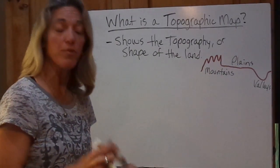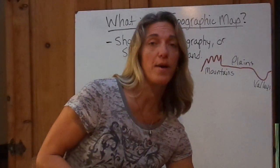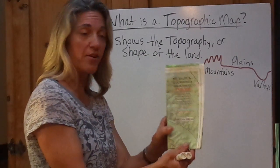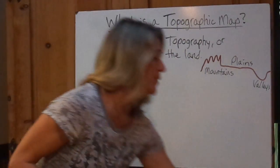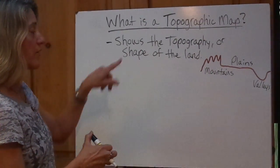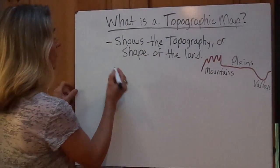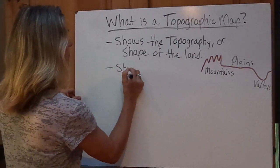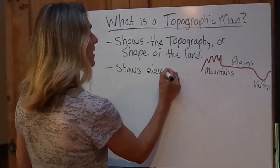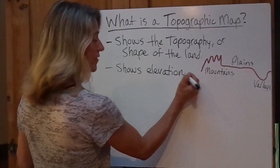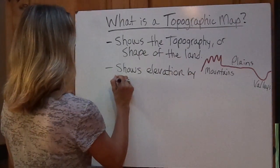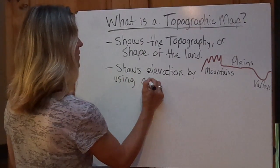In my family, we do a lot of hiking and backpacking — we use topographic maps all the time. Here's an example of what one looks like. The main thing you want to know is it shows the lay of the land. A topographic map shows elevation — that's the height above sea level — by using contour lines.